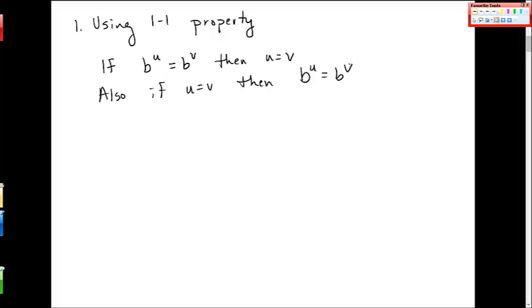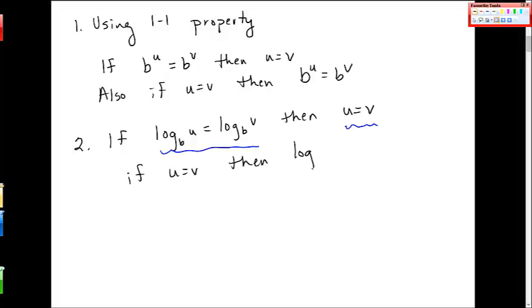This is also true for log equations. If log base b of u is equal to log base b of v, then I can go back to the inputs. If I know the output values are equal for this log function, then the inputs have to be equal. That's what the one-to-one property tells me. Also, if u equals v, then log base b of u equals log base b of v. And we use this direction. This is typically described as taking the log of both sides.